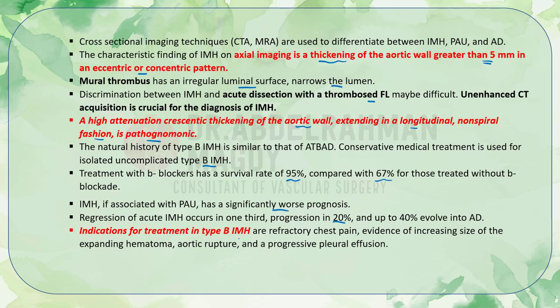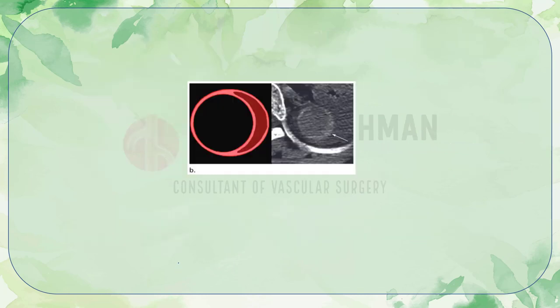Indications for treatment in type B IMH are refractory chest pain, evidence of increasing size or expanding hematoma, aortic rupture, and progressive pleural effusion. As seen in the diagram and CT scan, the unenhanced CT plays a key role in diagnosing the high-attenuation crescentic sign in the thickened aortic wall, which is characteristic of IMH.